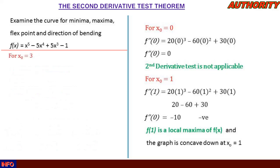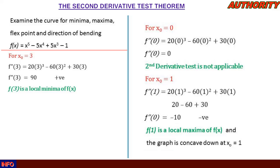For x₀ = 3, we plug into the second derivative: f''(3) = 20(3)³ − 60(3)² + 30(3) = 540 − 540 + 90 = 90. Since this is positive, we conclude that f(3) is a local minima of the function f(x), and the nature of the graph is concave up at x₀ = 3.